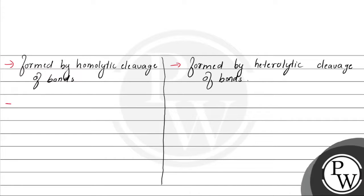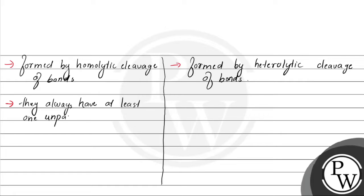The third point is, joh free radicals hote hain, they will always have at least one unpaired electron. Whereas, on the other hand, joh hamare ions hote hain, unpaired electron nahi hote hain — sare electrons paired condition mein rahte hain. Electrons are paired in ions.